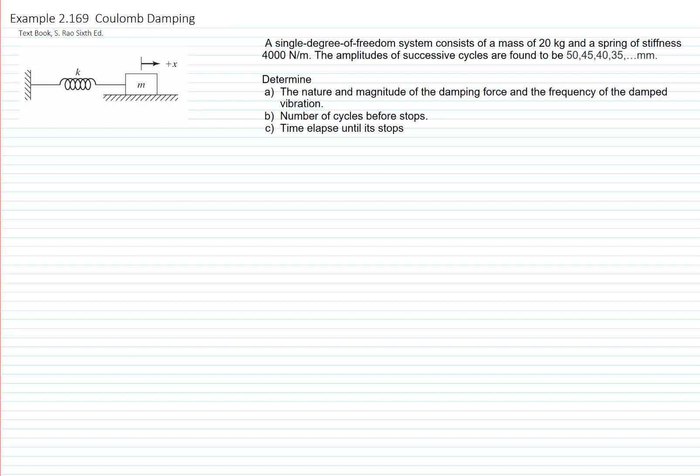This is example number 2169 and we will work with coulomb damping. We have here a single degree of freedom system that consists of a mass of 20 kilograms and a spring of stiffness 4,000 newtons per meter.